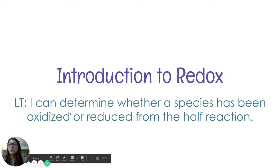Our learning target, I can determine whether a species has been oxidized or reduced from the half reaction. I just want to make it clear. Some chemists will use the term species. Really what that means is an element or a compound. It's like a general term.